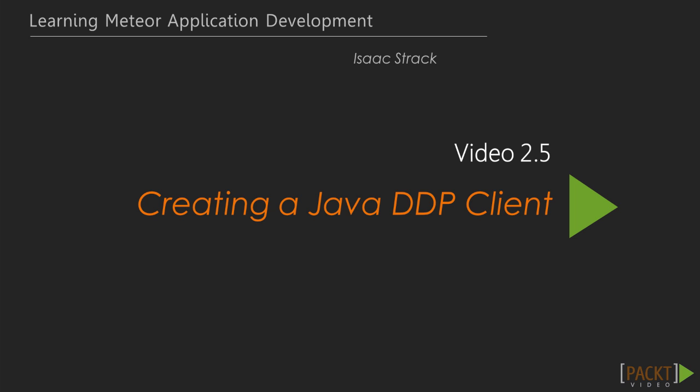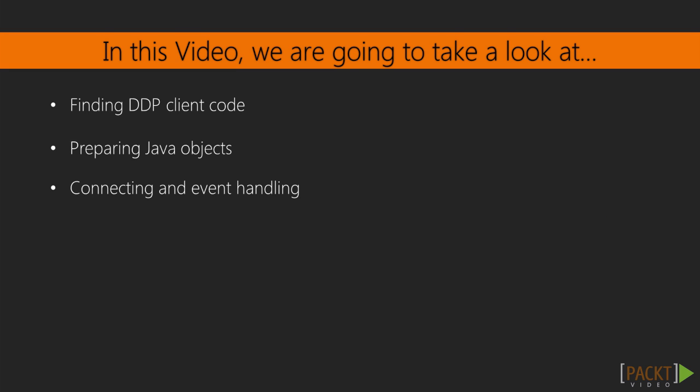Hey everybody, welcome back to RapidMeteor. Today we will be going over the fifth video in section two, creating content and adding collections, creating a Java DDP client. Now this particular video is not required for the course, but we wanted to give you a good example of what it's like to use another DDP client. In this section we will go over how to find other DDP client code, specifically prepare a Java DDP client and connect it into our application using some event handling.